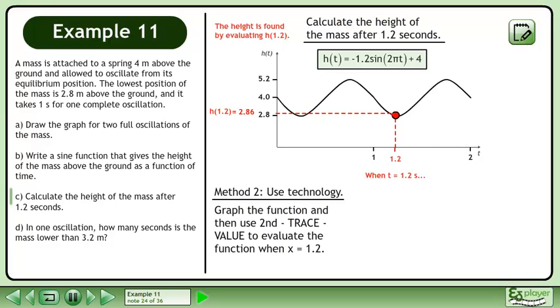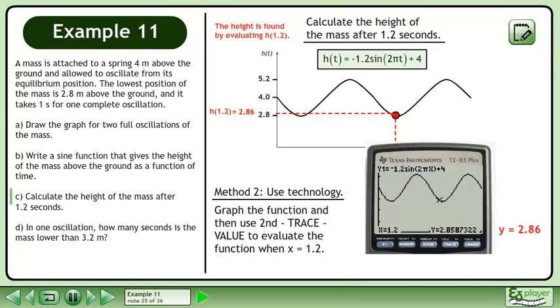Graph the function and then use 2nd trace value to evaluate the function when x equals 1.2. This gives us a height of 2.86 meters, which is the same result we obtained in Method 1.